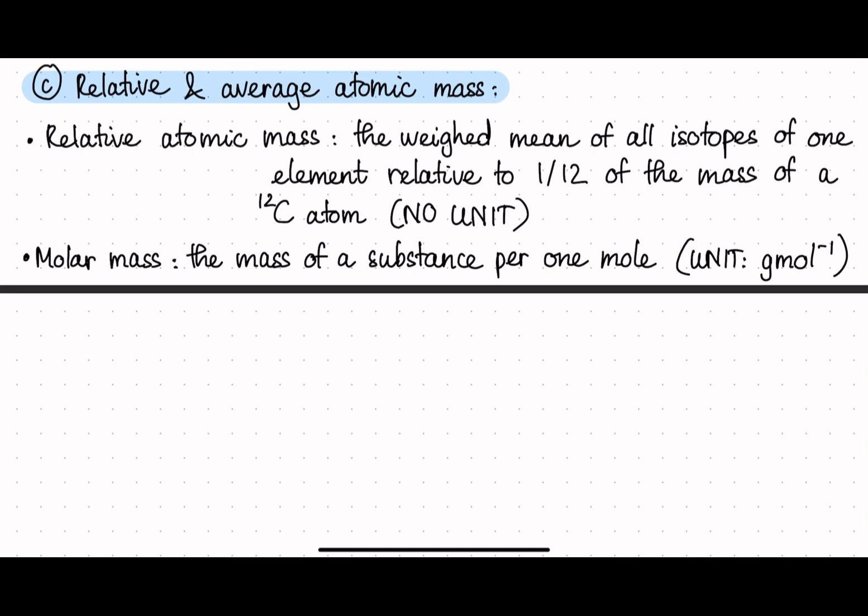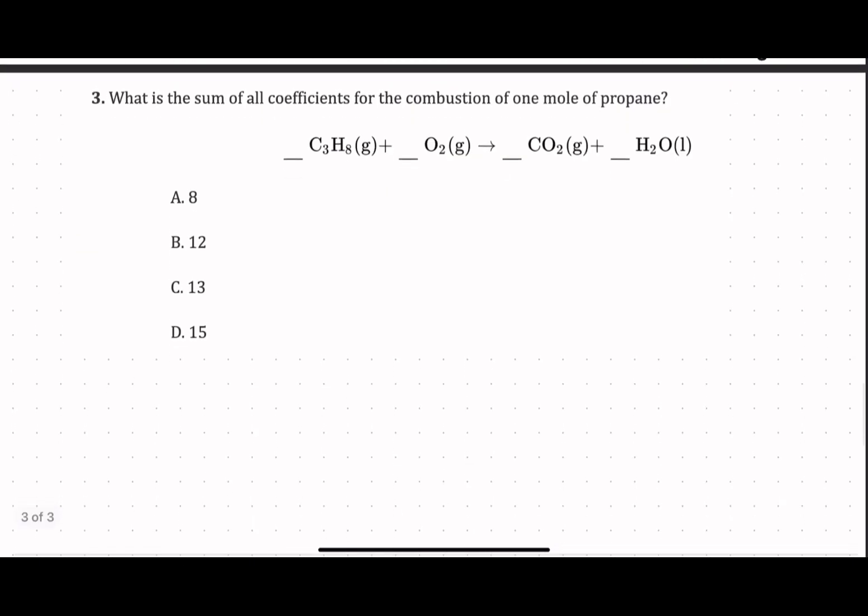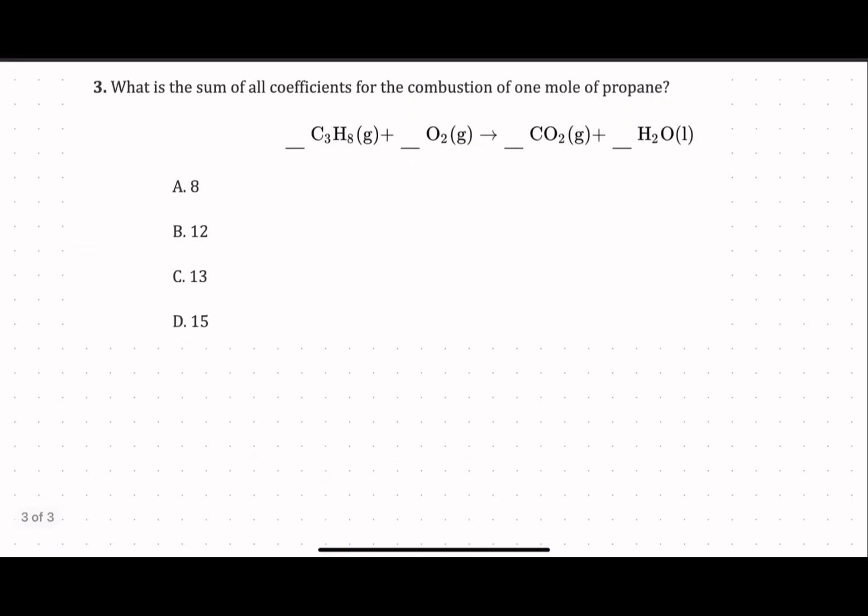Okay, so we have an example here for balancing equations. The question asks for the sum of all coefficients for the combustion of one mole of propane. So here, if we balance in the order of occurrence, we need to balance the carbon first.